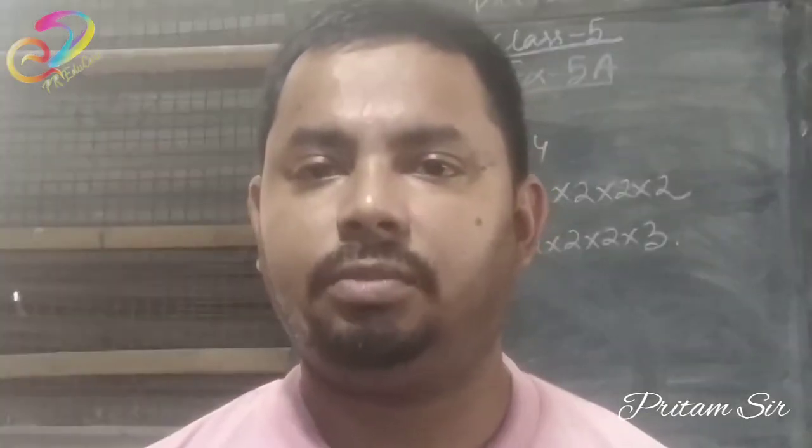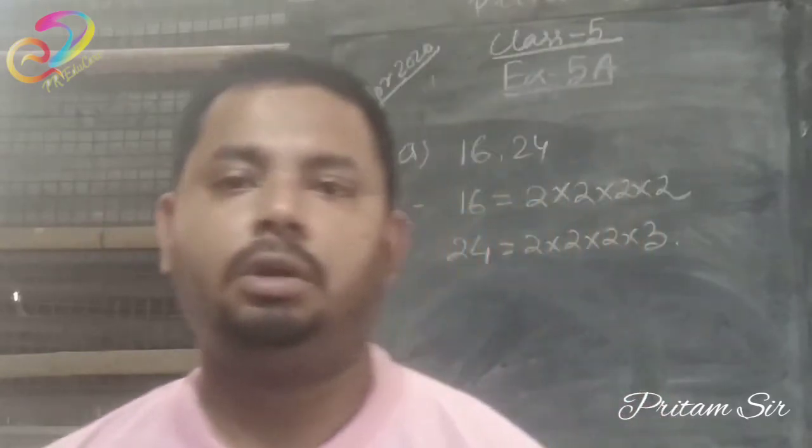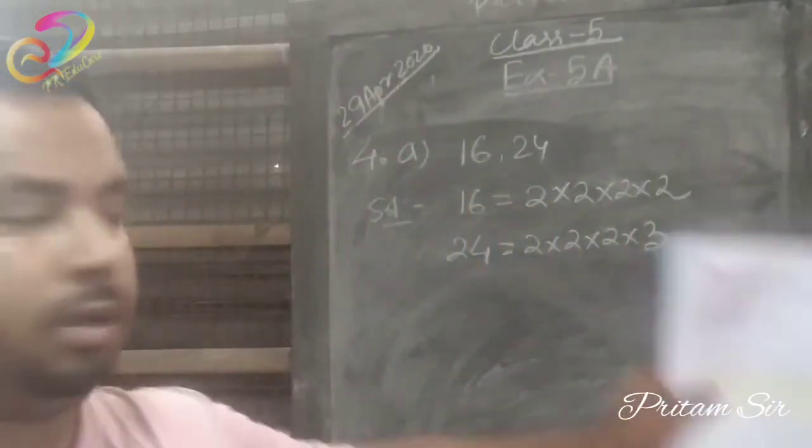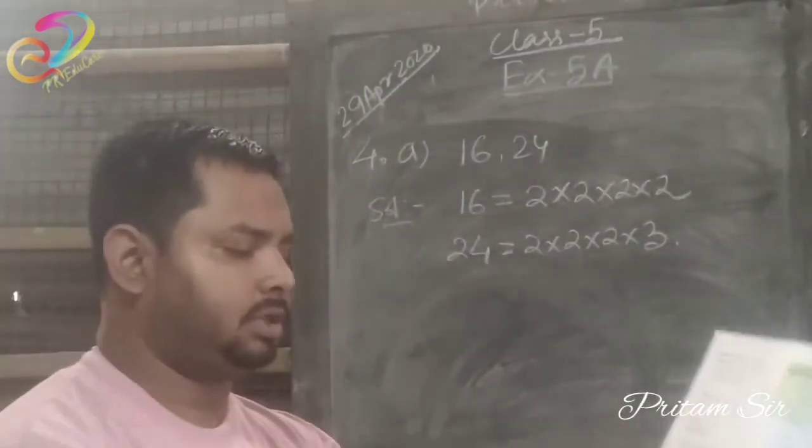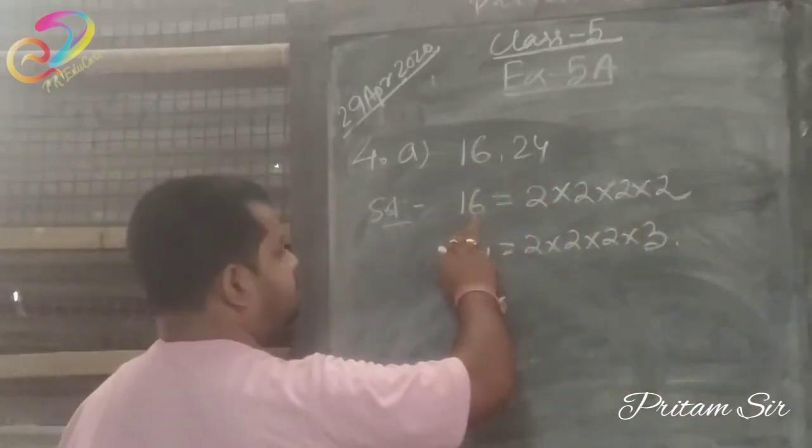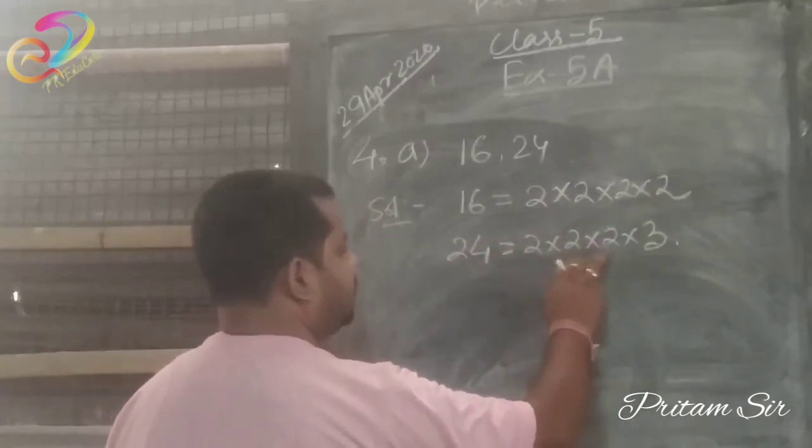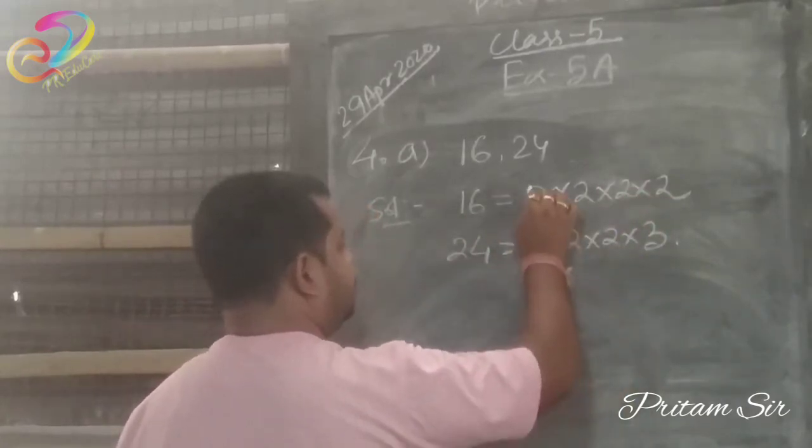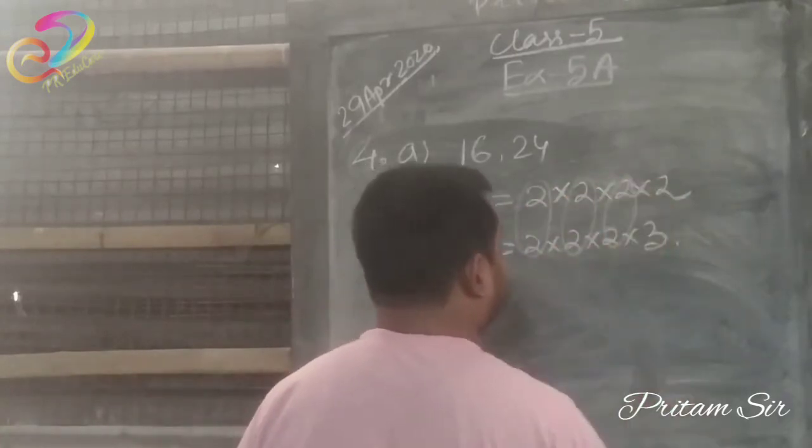Question number three on how to find LCM. Now we'll solve question number four. Two numbers are given to find the LCM by prime factorization method. We have numbers 16 and 24. Factors of 16 are 2×2×2×2, factors of 24 are 2×2×2×3. Common numbers are this is common, this is common, this is common.